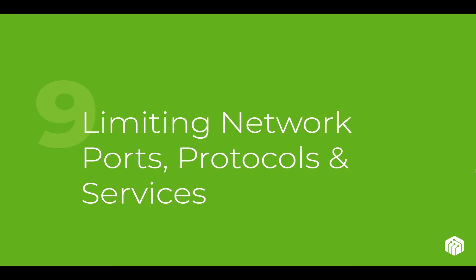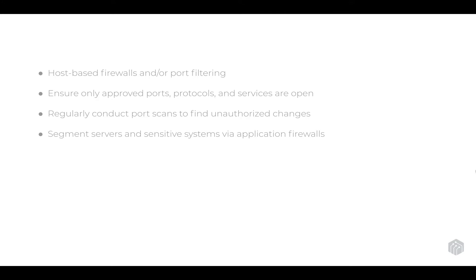Control number nine is to limit network ports, protocols, and services. On every host, if it has a host-based firewall or port filtering, turn it on. There's really no need for devices inside your network to communicate freely — Bob's computer doesn't need to talk to Sally's computer, especially if you're moving towards zero trust. Ensure that only approved ports, protocols, and services are open. Regularly conduct port scans to find any unauthorized changes early, and segment your servers and sensitive systems via application firewalls. We want to segment our network into as many small pieces as possible so that if something happens to one area, it can't spread like wildfire.